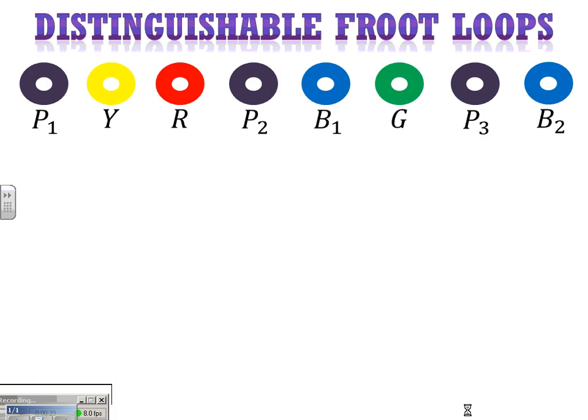I wonder how many ways we could arrange these fruit loops in a line and have that be a distinguishable arrangement. And the first thought for us would be, well, this isn't so different than the closet problems we discussed before, or a typical permutation in that, how many selections do we have for our first fruit loop?